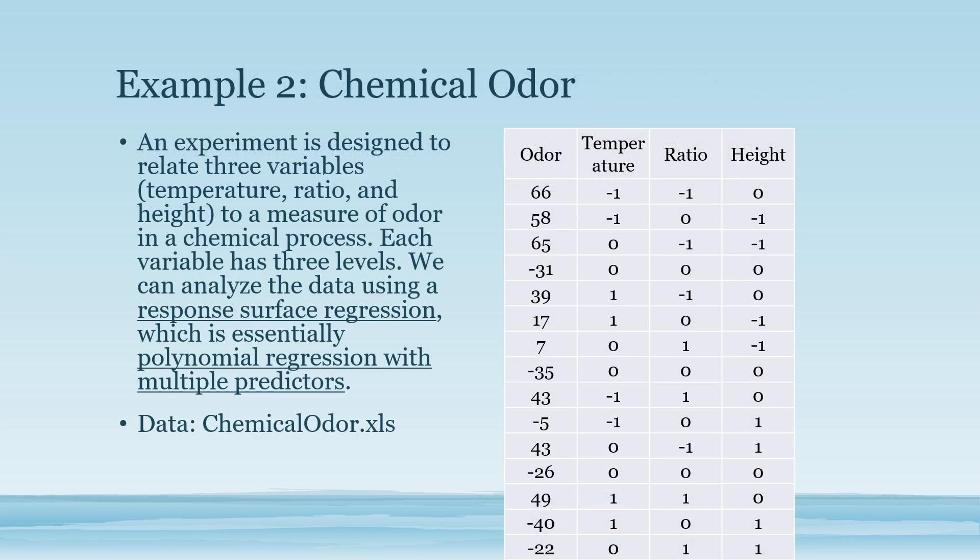In this example, we have multiple predictors. An experiment is designed to relate three variables: temperature, ratio, and height to a measure of odor in a chemical process. Each variable has three levels. We can analyze the data using a response surface regression, which is essentially polynomial regression with multiple predictors. The data file is chemical odor Excel spreadsheet.